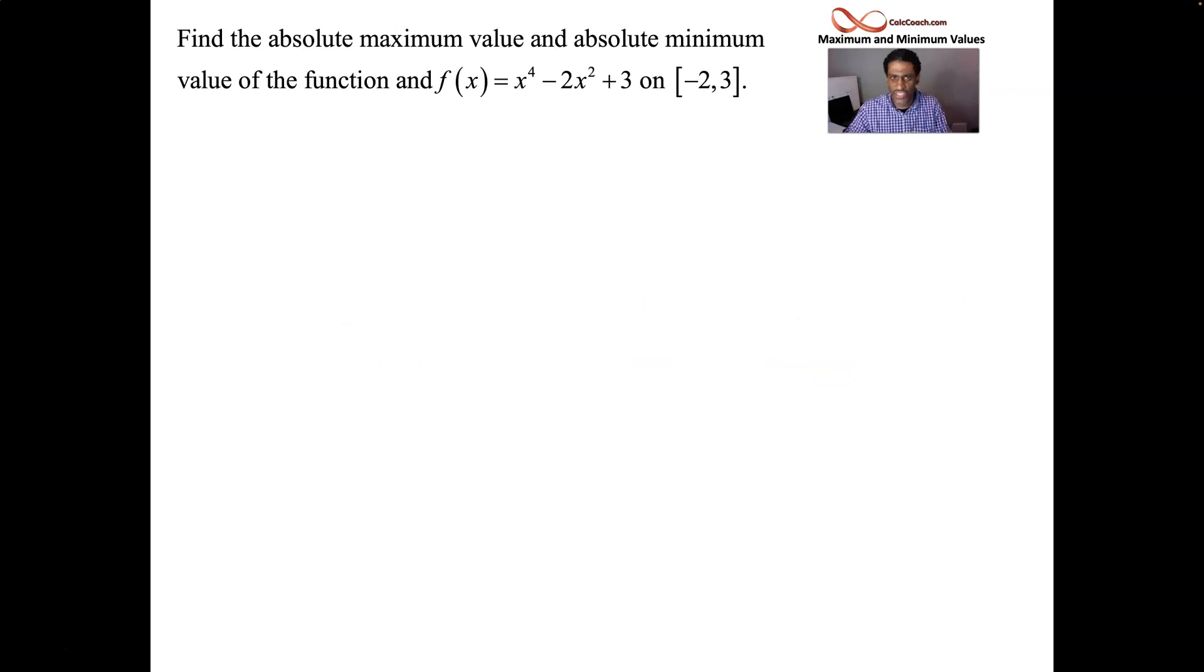Let's see an example. This function is a nice simple function, x^4 - 2x^2 + 3 and the interval that we're interested in is -2 to 3. It's a polynomial, it's continuous everywhere, especially on that interval. Extreme value theorem says someplace in that interval or on the endpoints, your function will obtain its absolute maximum value and its absolute minimum value.